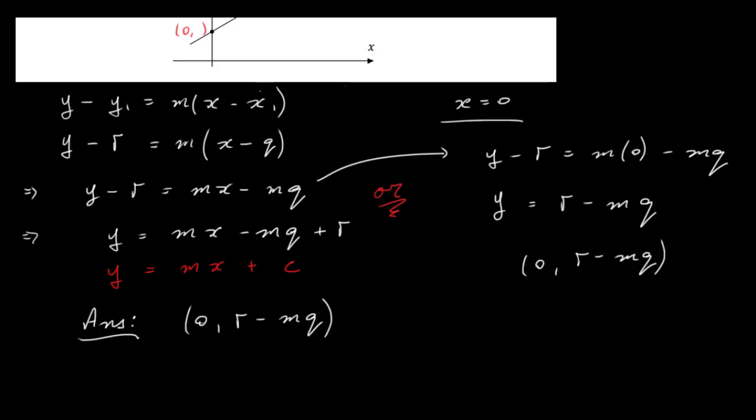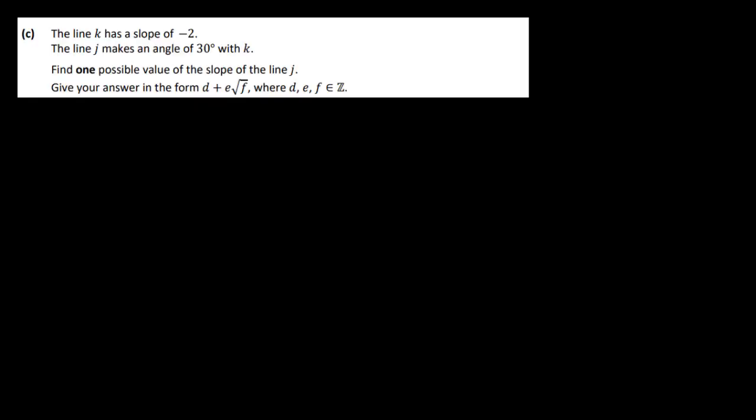Okay, so that's it for that part of the question. Let's move down to the next one. The line K has slope -2. The line J makes an angle of 30 degrees with K. Find one possible value of the slope of the line J. Give your answer in the form D + E√F where D and F are integers. Okay, so once you see this, the angle between two lines, you should think about the other formula that we've used when dealing with the line. Finding the angles between two lines when you're given the slopes. So the formula is the tan of the angle is equal to ±(M1 - M2)/(1 + M1 × M2).